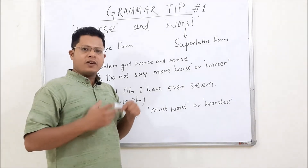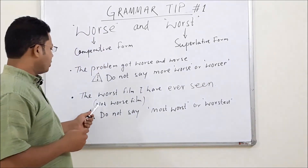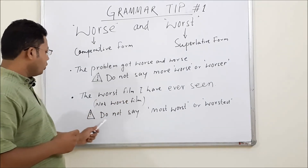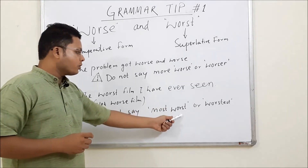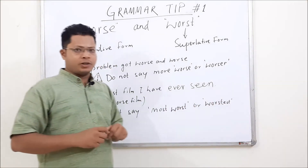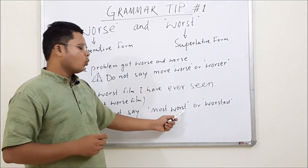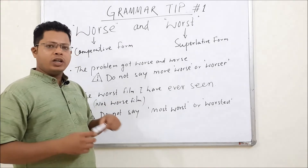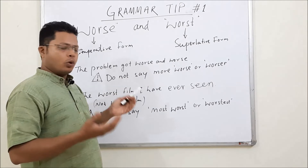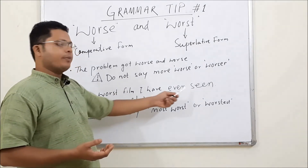Say 'the worst film I have ever seen' — not 'worse film,' but 'the worst film.' And do not say 'most worst' — avoid both 'more worse' and 'most worst.' It is only 'worst.' For example: 'The problem got worse and worse' and 'the worst film I have ever seen.'